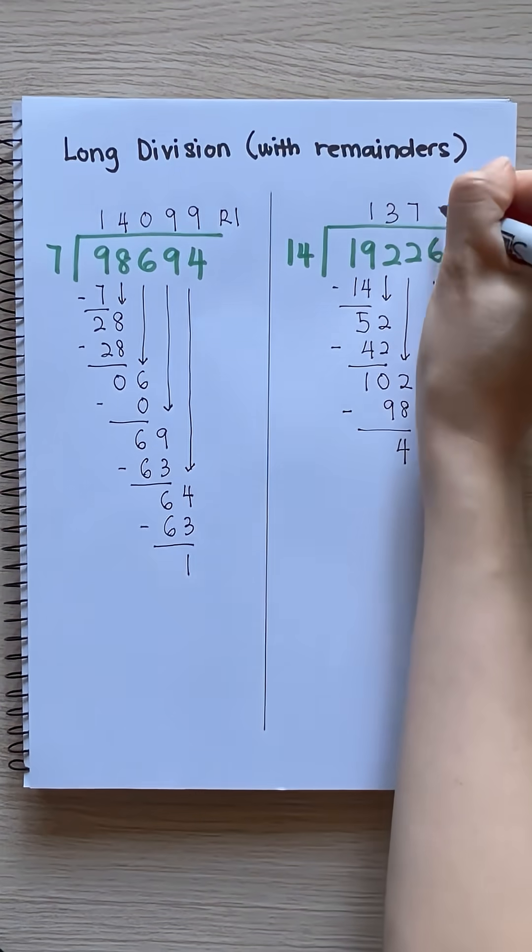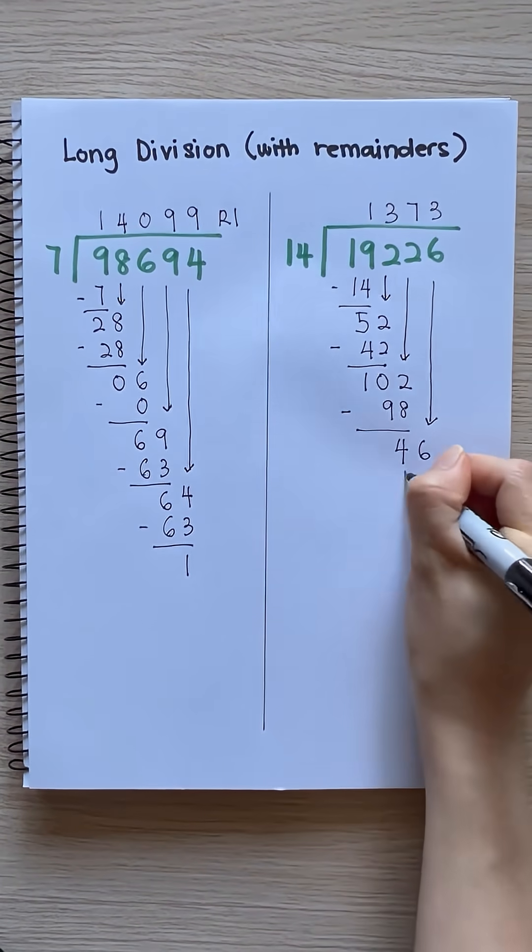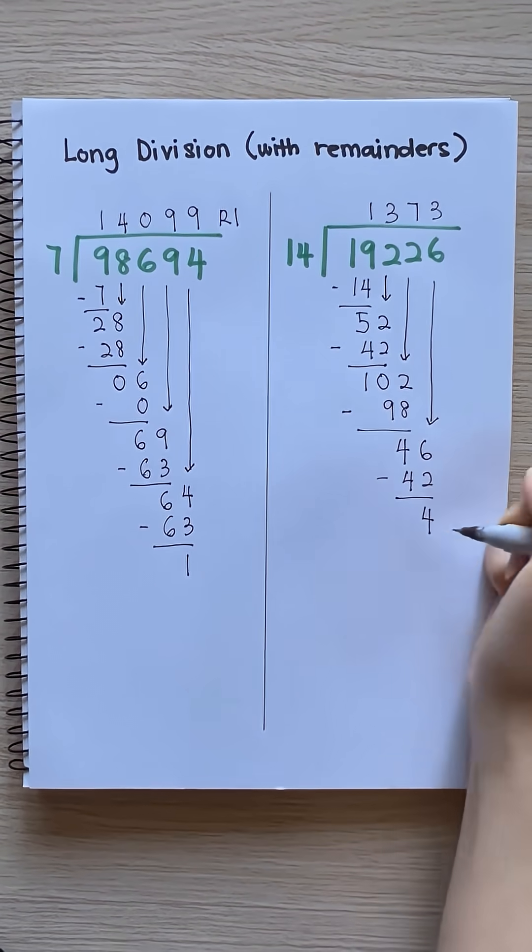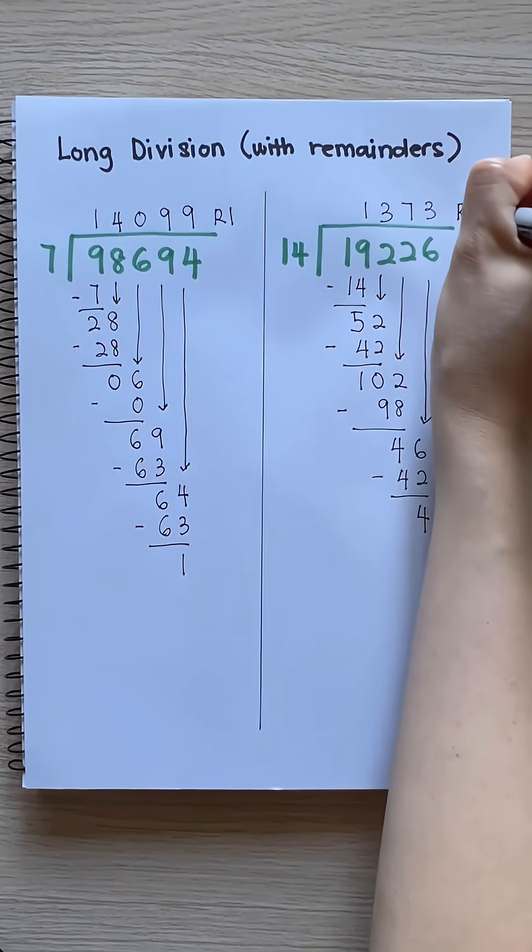14 times 3 equals 42. 46 minus 42 equals 4. Remainder 4.